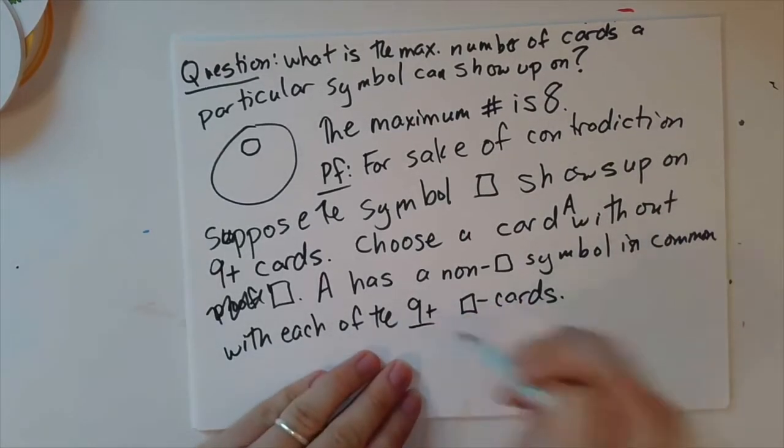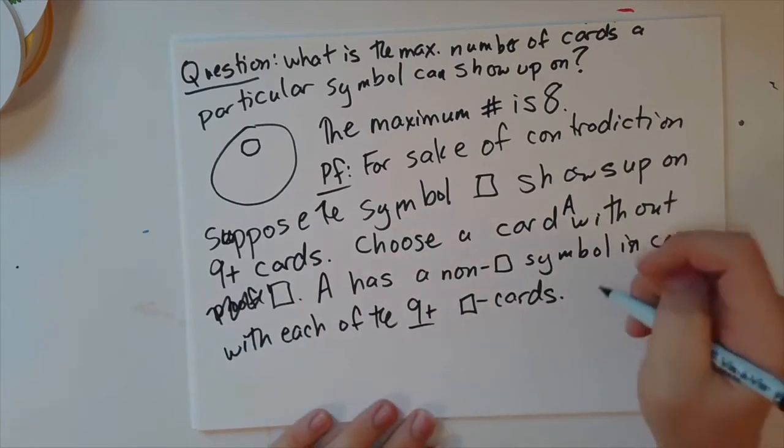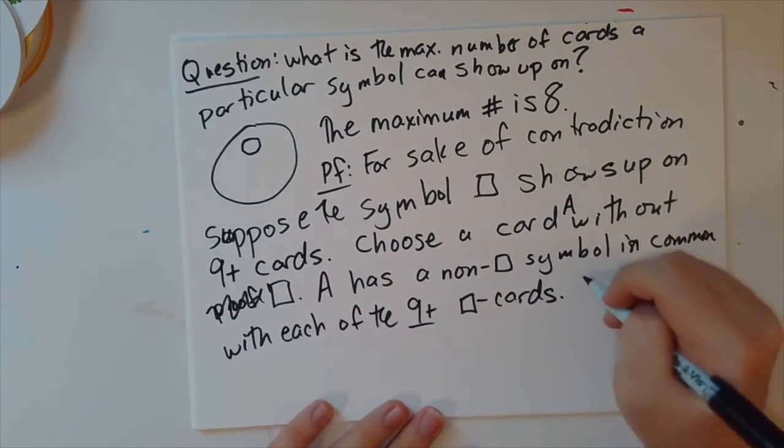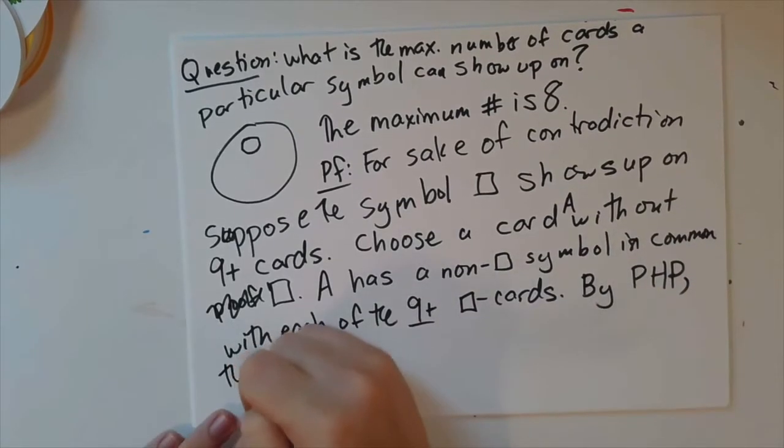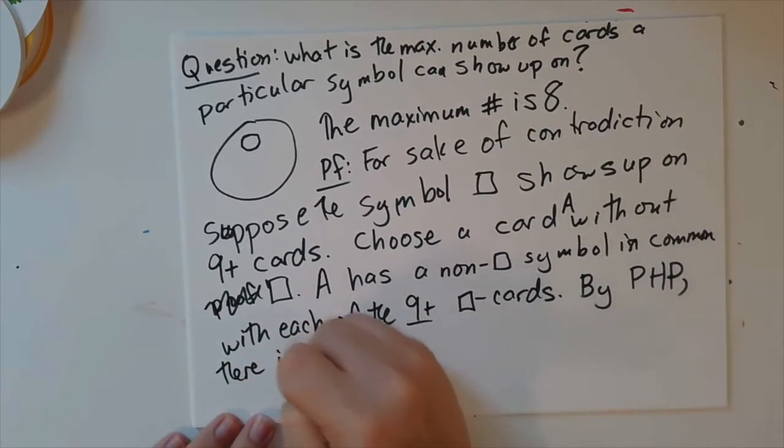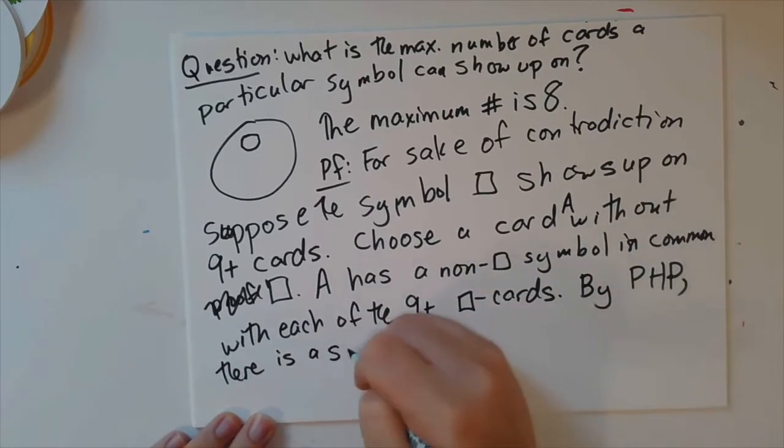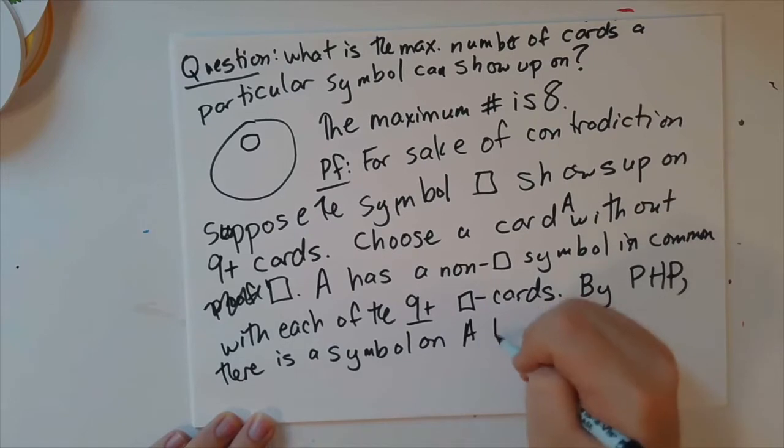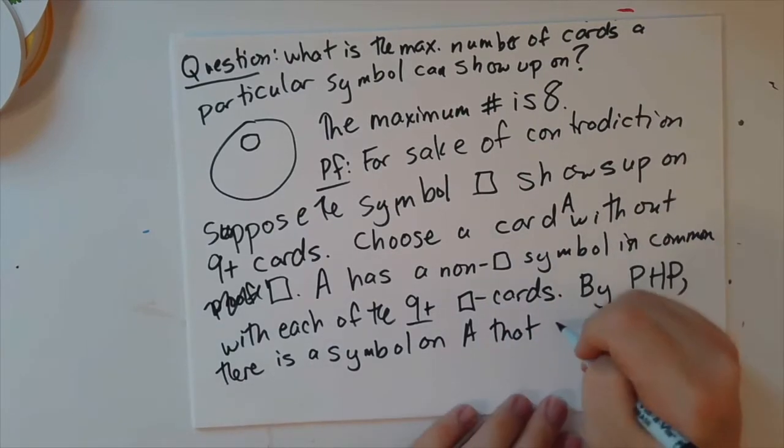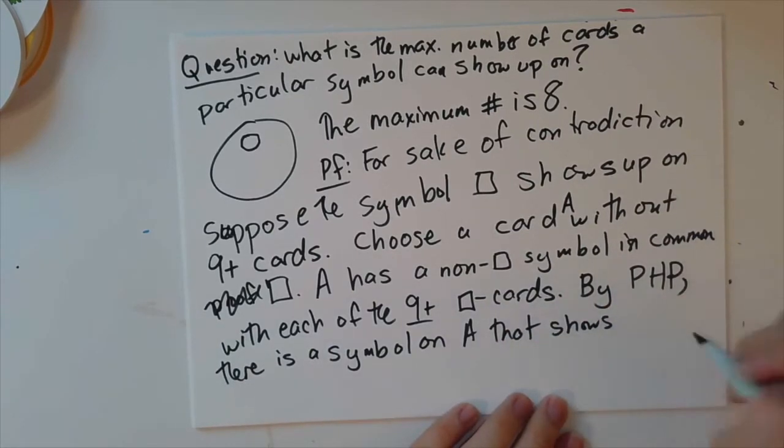So it has a non-proof box symbol in common with each of the nine plus cards. Ah, but nine is more than eight. And so by the pigeonhole principle, that tells me there is a symbol on A that shows up on two proof box cards.